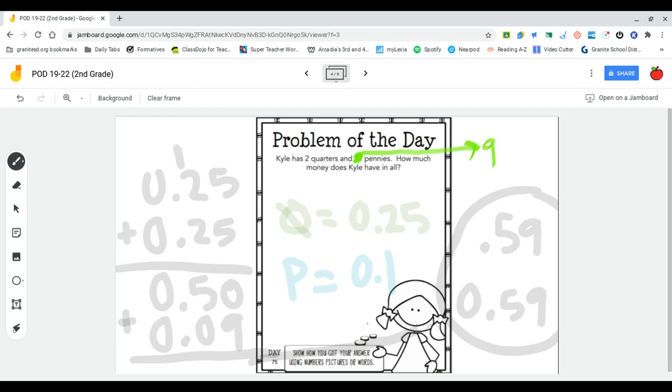However, your numbers are a little different. He actually only has two quarters and he has 11 pennies.